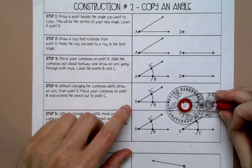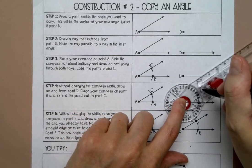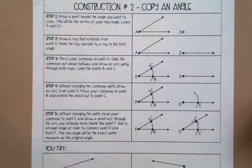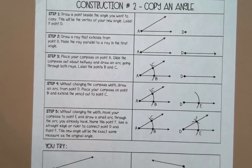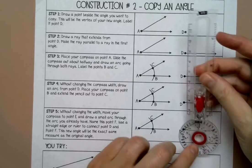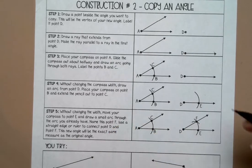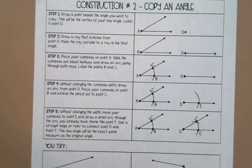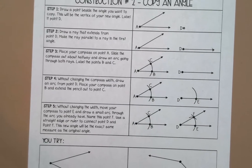Without changing the width, I'm going to go to point D and do the same thing. I'm going to draw an arc and label this point E. Then I'm going to put my compass on point E and draw another arc, and where they intersect that's where my new ray will go. Okay, so let's try that with an actual example.